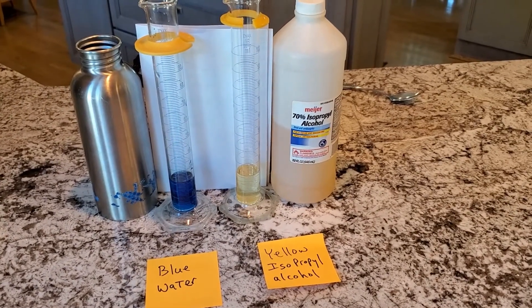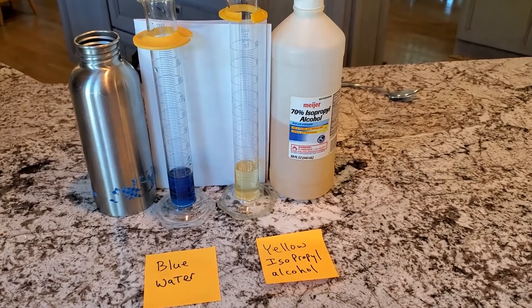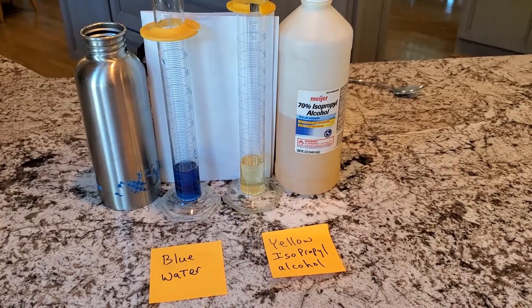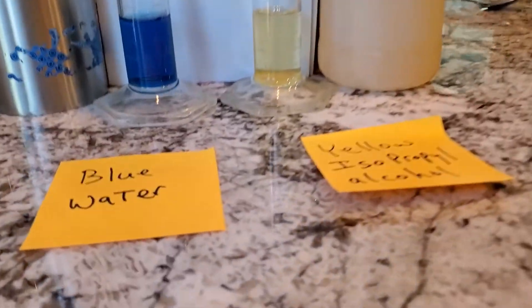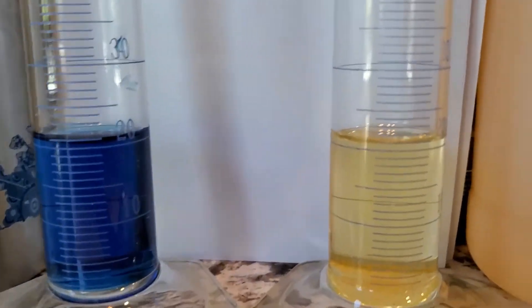Okay, so for this part we have a measured amount of yellow isopropyl alcohol and an amount of blue water. We will need to get an exact measurement on each quantity, so let's first take a look at...